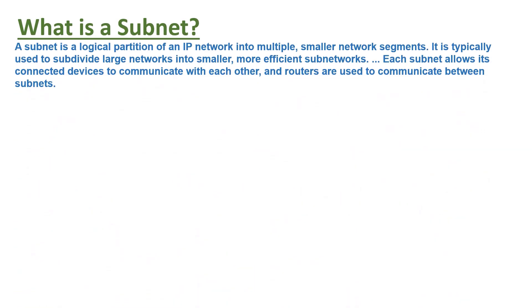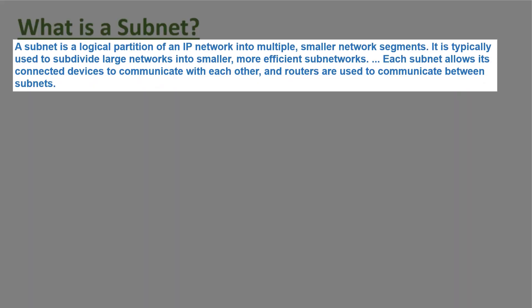What is a subnet? A subnet is a logical partition of an IP network into multiple smaller network segments. It's typically used to subdivide large networks into smaller, more efficient subnetworks. Each subnet allows its connected devices to communicate with each other, and routers are used to communicate between subnets.